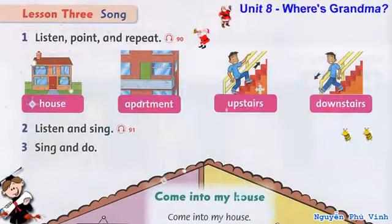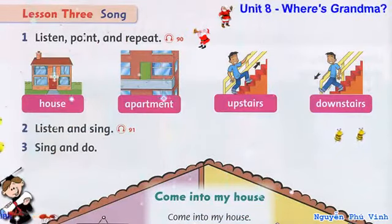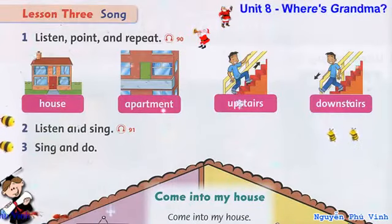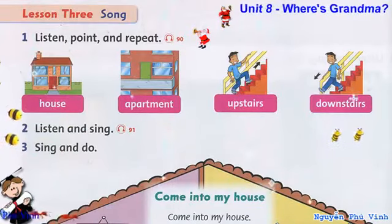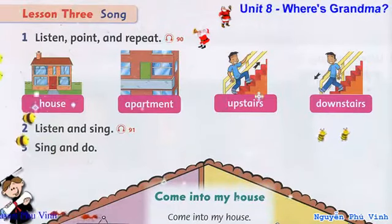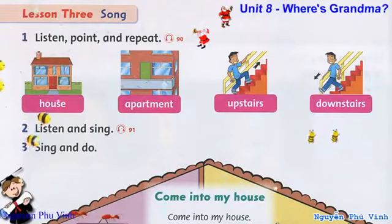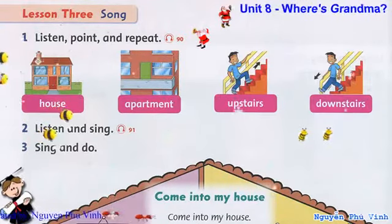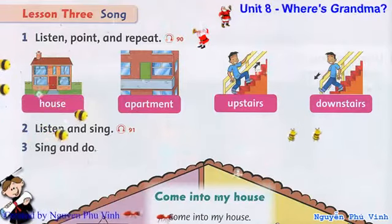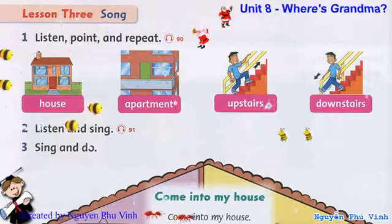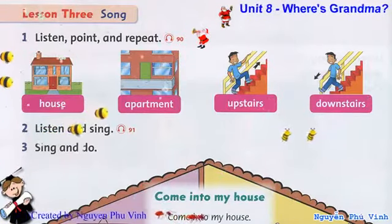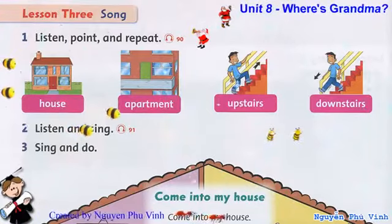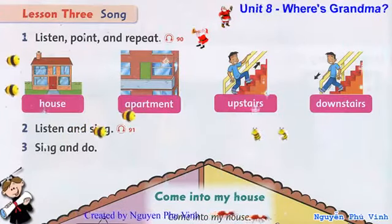Listening 90. Listen and point. House. Apartment. Upstairs. Downstairs. Upstairs. Apartment. Downstairs. House.